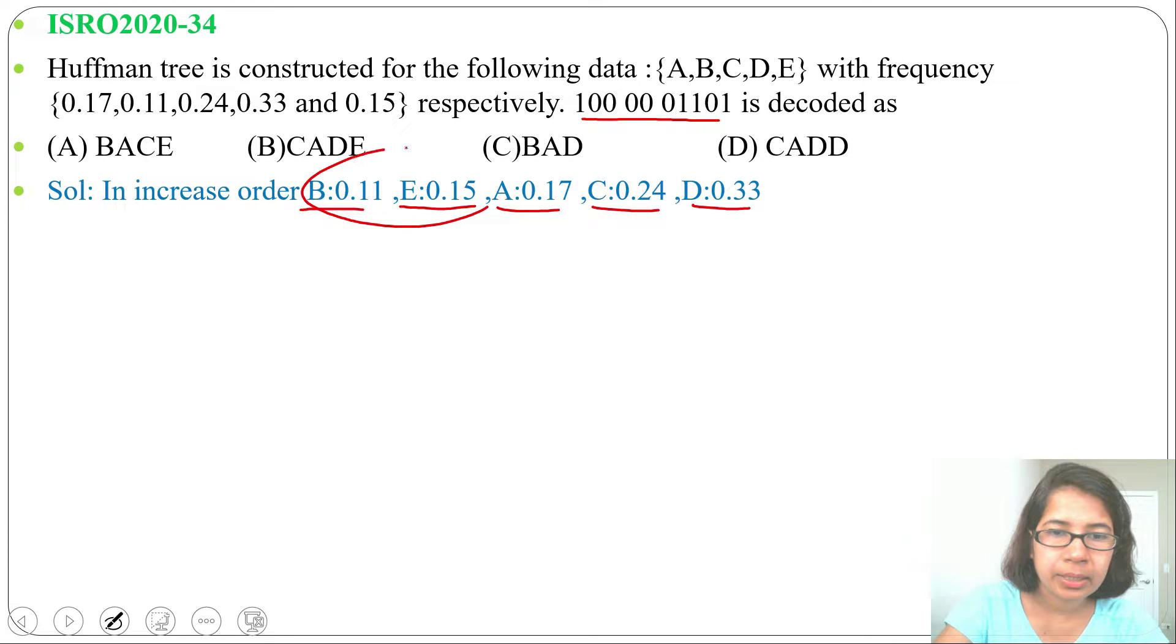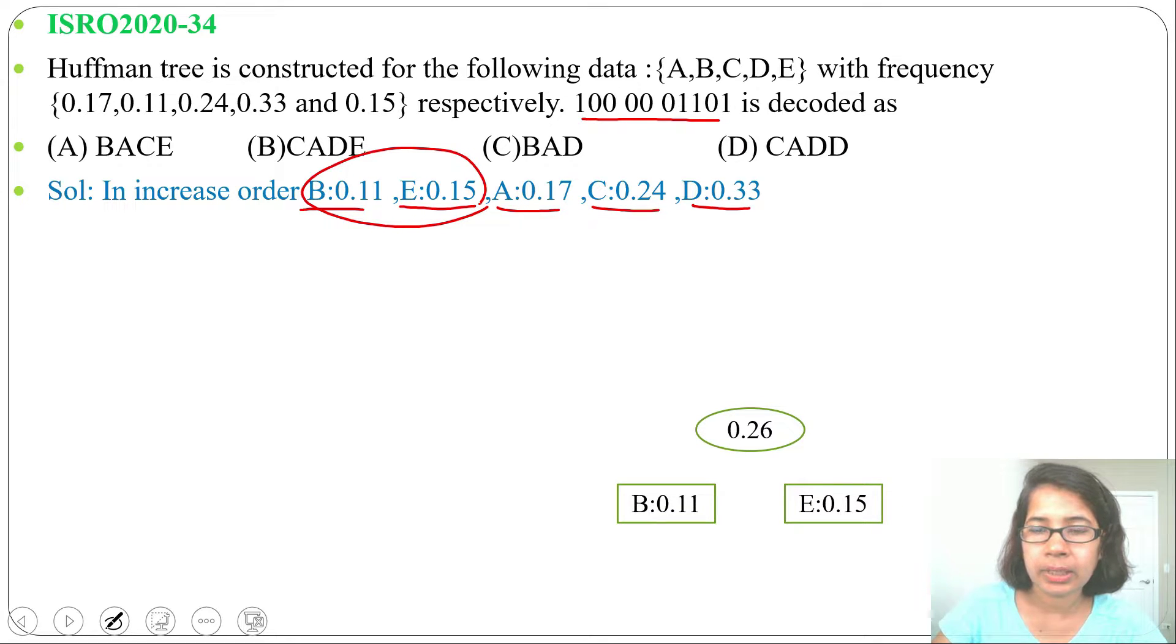First we will merge these two B and E, so 0.11 plus 0.15 it will be 0.26. Then we will insert this 0.26 in the queue, let me write here 0.26, it's after 0.24 and before 0.33.